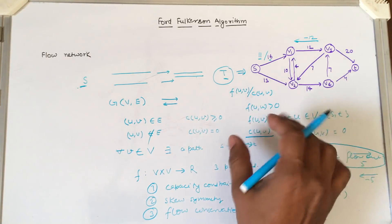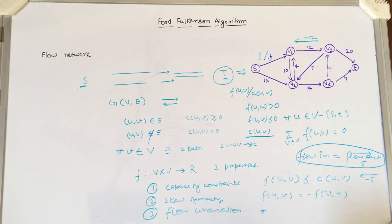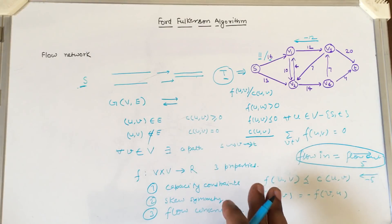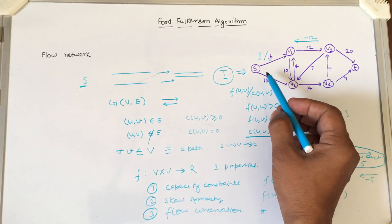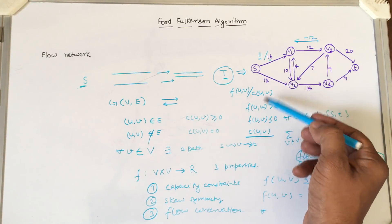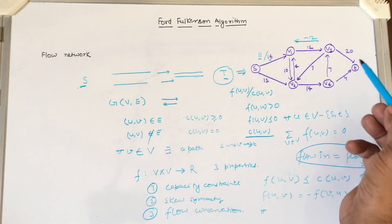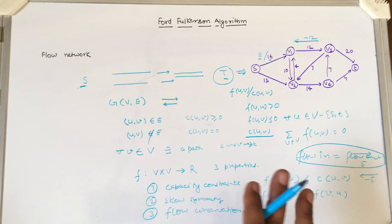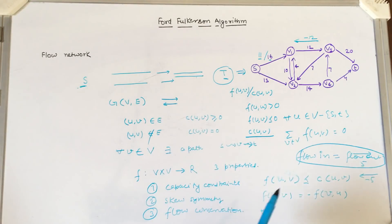Now we will start with the Ford-Fulkerson algorithm and solve the same problem using this algorithm. The goal is to maximize and find out the maximum possible flow from source to destination while satisfying all constraints defined over the flow network.